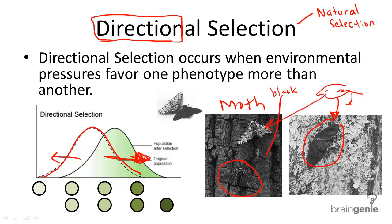So directional selection — a shift towards an extreme phenotype in a population — can be seen in many populations, and it can take place in either direction. Make a quick chart for yourself to compare directional, disruptive, and stabilizing selection so that you can study for your own self-edification. Check out those videos. Good luck.